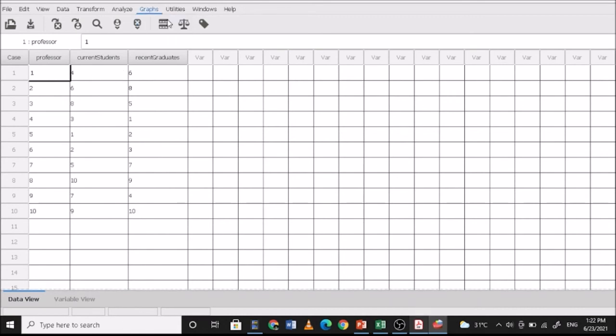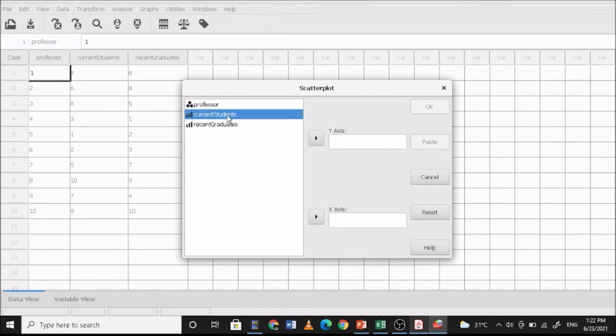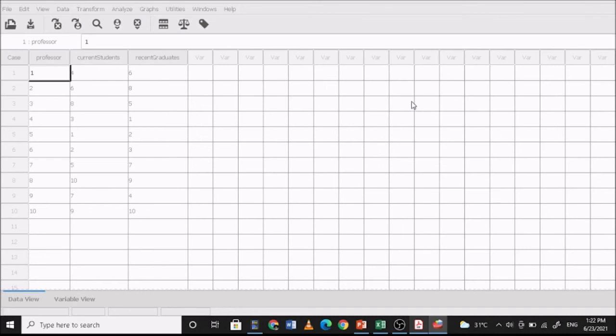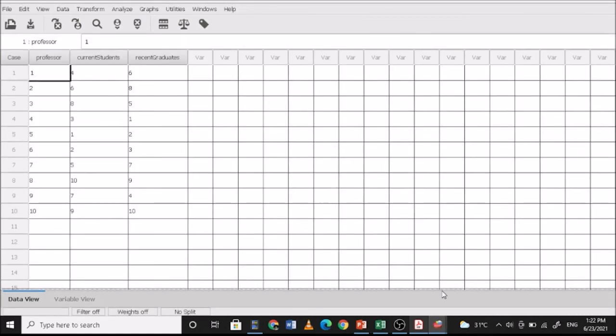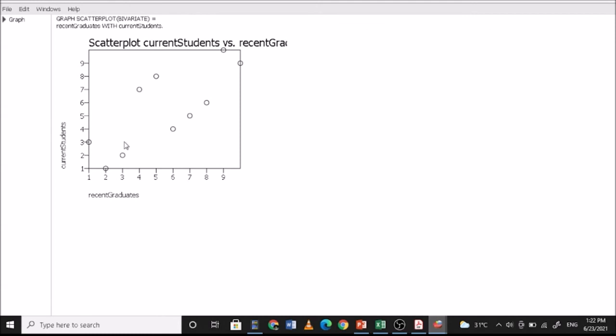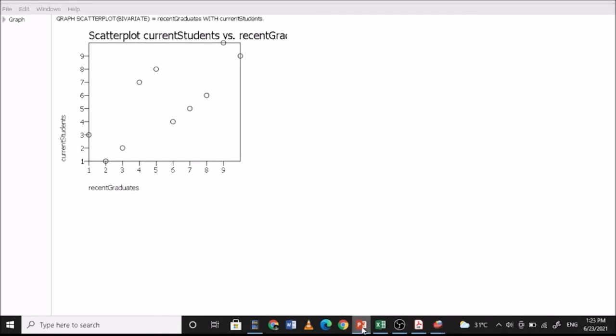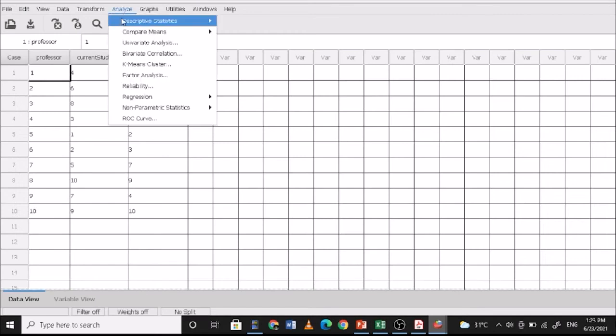If you want to check if there is a relationship, you can use a scatterplot. There's some relationship, but anyway, just checking. Don't really care if there will be outliers or not, because again, Spearman correlation is not concerned with outliers. Analyze, Descriptive Statistics, then Crosstabs.